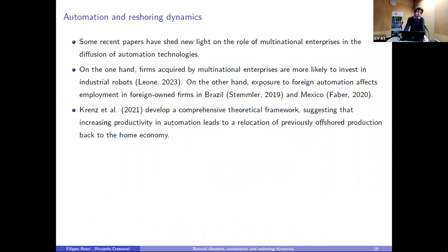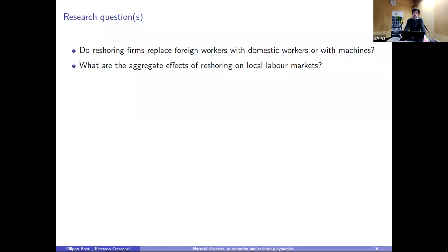These two broad topics — reshoring and automation — have been considered together in some recent contributions. There is evidence that multinationals are more likely to invest in industrial robots, and some studies show that exposure to foreign automation affects employment in foreign-owned firms, at least in Brazil and Mexico. A recent work by Kranz et al. developed a comprehensive theoretical framework suggesting that increases in automation productivity can lead to progressive relocation of previously offshored production. This is where we try to contribute to the literature.